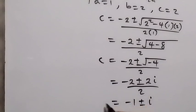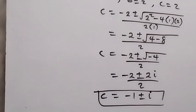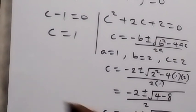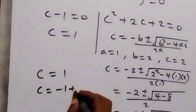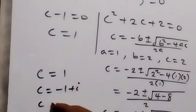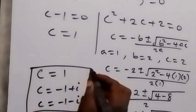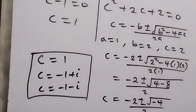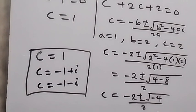We can conclude that the values of c from the problem are: c equals 1, c equals minus 1 plus i, and c equals minus 1 minus i. These are the three solutions. Thank you for watching — don't forget to subscribe to my channel and turn the notification bell on. See you in the next class, bye for now.